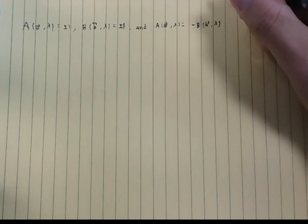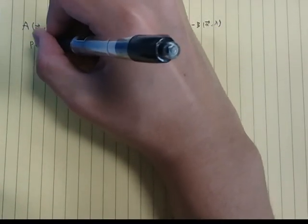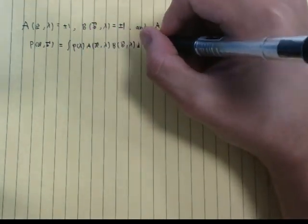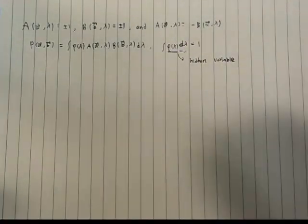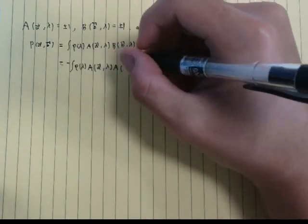When the detectors are aligned, the results are perfectly anti-correlated like this. So now the average of the product of measurements is the integral of function A, B and the normalized probability density of the hidden variable. Let us call it rho. Using the previous anti-correlation, we get this.